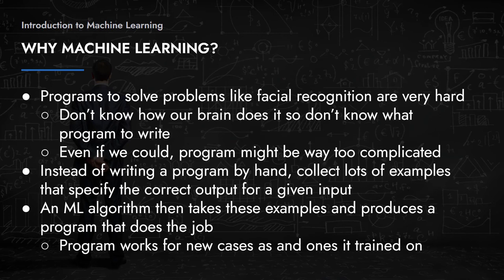Some of these problems are difficult because they seem like they should be solvable — they're tasks so easy for us as humans to perform. But we don't really know how our brains perform them, and even if we did, writing a program to mimic that would be extremely complicated. Instead of writing a program by hand, we can collect a lot of labeled examples — for facial recognition we collect millions of images, classify them ourselves, and feed that data into a machine learning algorithm that learns to classify new cases.